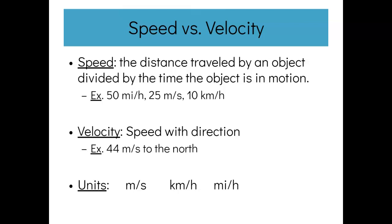For example, 44 miles per second to the north would be an example of velocity, because velocity is a vector quantity, so it needs a direction associated with it. All of these units, whether it's speed or velocity, are going to be in meters per second, kilometers per hour, or miles per hour.